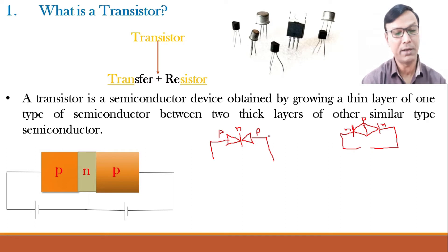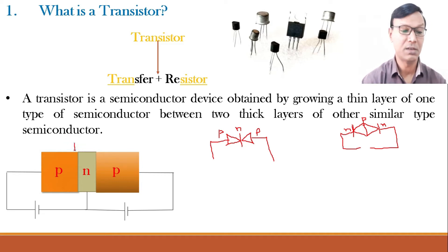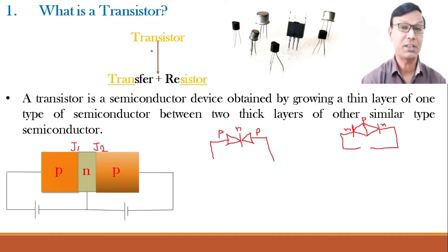Now why are these transistors so important? Because this transistor can perform the function of amplification. What is amplification? For this transistor there are two junctions. I will call this junction J1 — this PN junction — and this PN junction I will call J2. Now what is transistor? Transfer plus resistor. It is transferring the current from a low resistance circuit to a high resistance circuit. Say this J1 I have forward biased. When a PN junction is forward biased, the resistance is very low.